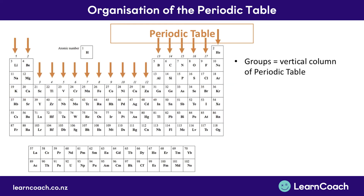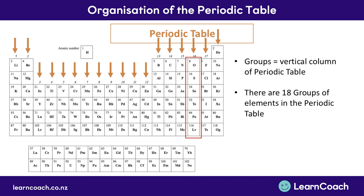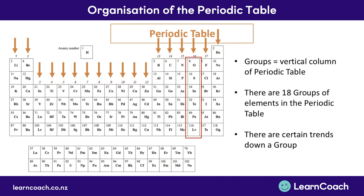We then need to think about what a group is. A group on the periodic table is a vertical column, and here you can see I've highlighted group 16. There are 18 groups of elements on the periodic table, shown by the orange arrows, where group 1 begins on the left and group 18 finishes on the furthest right. There are certain trends down a group, moving from top to bottom in the direction of the red arrow, and this is a focus of this video.